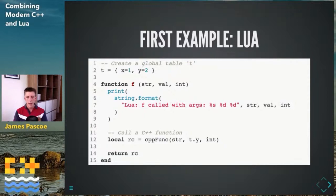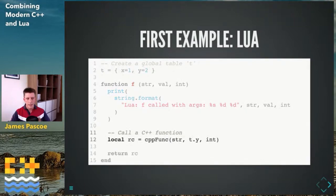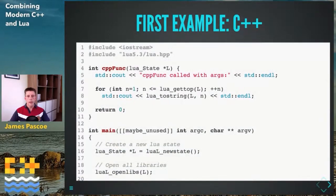Let's look at a first example showing how to call Lua from C++ and have that Lua call back into C++. All of this code is complete — you can cut and paste it off the slide. We're creating a global table T and declaring a function F; as part of function F we're calling a C++ function we'll see on the next slide. As this Lua stands, running it in an interpreter won't do anything — there's no stimulus — and that stimulus comes from the C++.